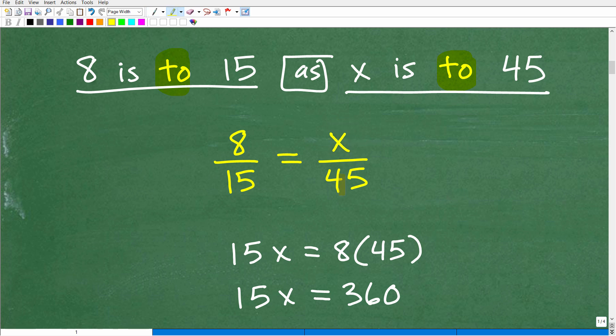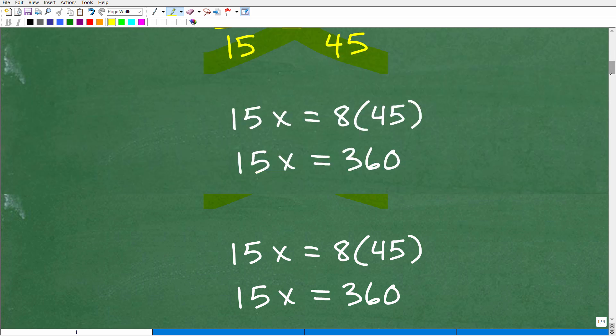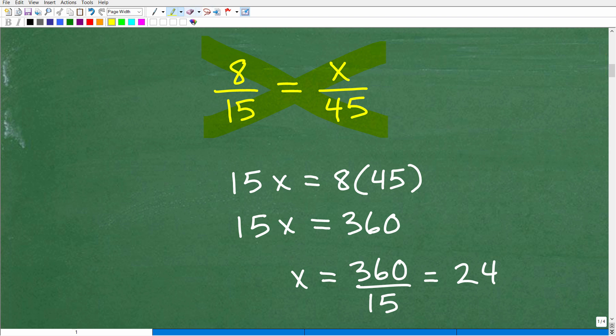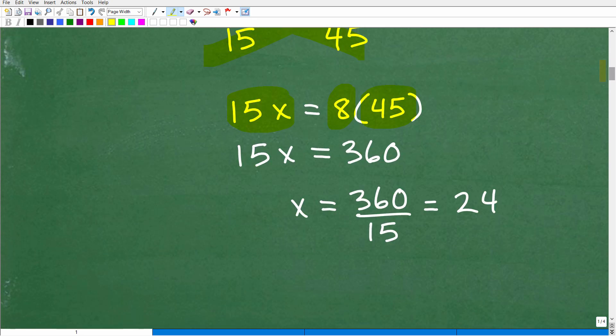Now to solve for x, what do we need to do? Well, we're going to go ahead and use the cross product. So let's go ahead and take a look at that now. So it would start this way. So 15 times x is 15x. We're going to use some basic algebra here and 8 times 45, we'll just write that right there. 8 times 45. And then you can get your calculator out to help you out. 15x is equal to 8 times 45 is 360. So to solve this basic equation, what do I need to do to solve for x? I need to divide both sides of the equation by 15. So x is going to be equal to 360 divided by 15, which of course is 24.